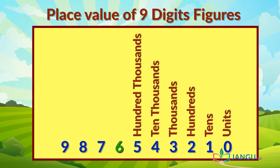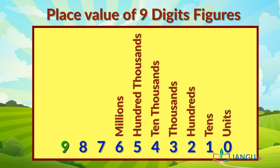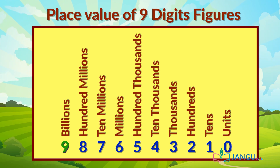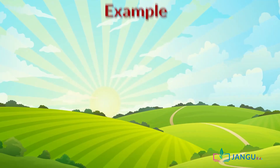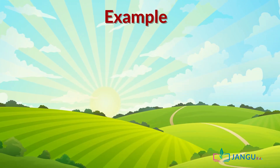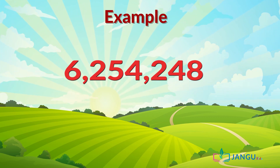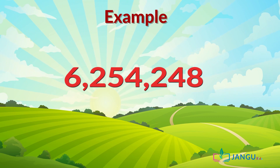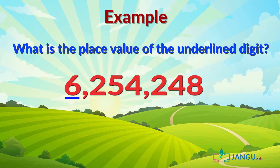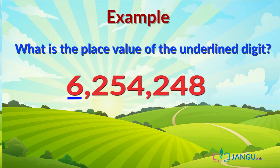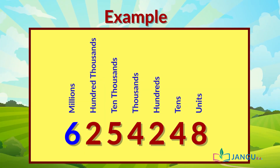7-digit numbers attract another column called millions, and for 10-digit numbers it's called billions. Now take a look at this example: 6,254,248. What is the place value of the underlined digit? The place value of 6 is millions.